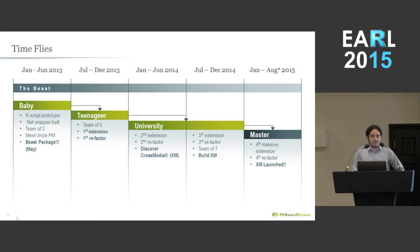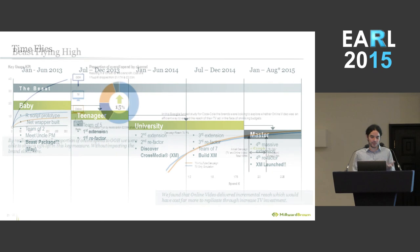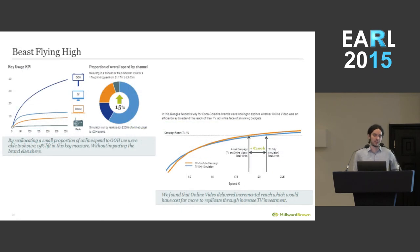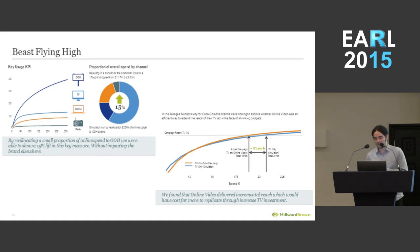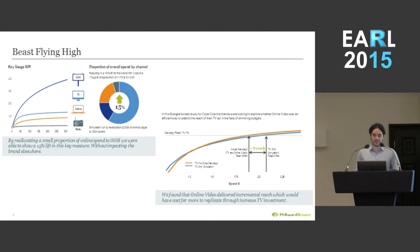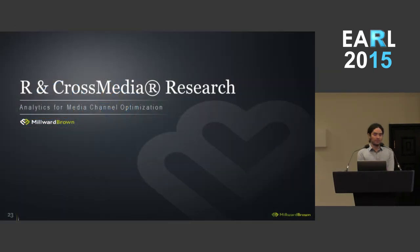Just a couple of quick real case scenarios: we identified that a reallocation of some budget from TV to out-of-home — all the billboards you see outside — would result in a very decent increase in some of the KPIs that our clients wanted for their brand equity measures. And similarly, a Google-funded study for Coke resulted in the finding that they should take away some investment from television into online video so that they could get better reach and talk to the people they were actually interested in. So I've run out of time. Thank you so much.